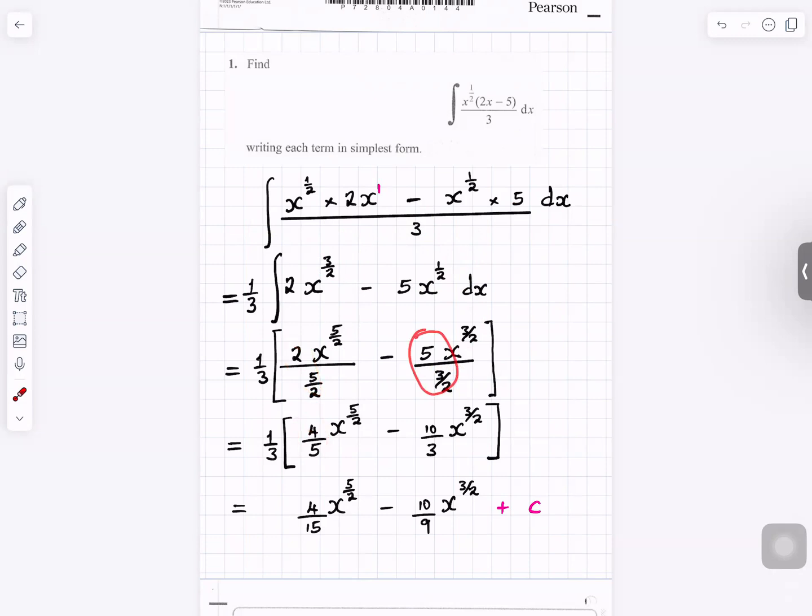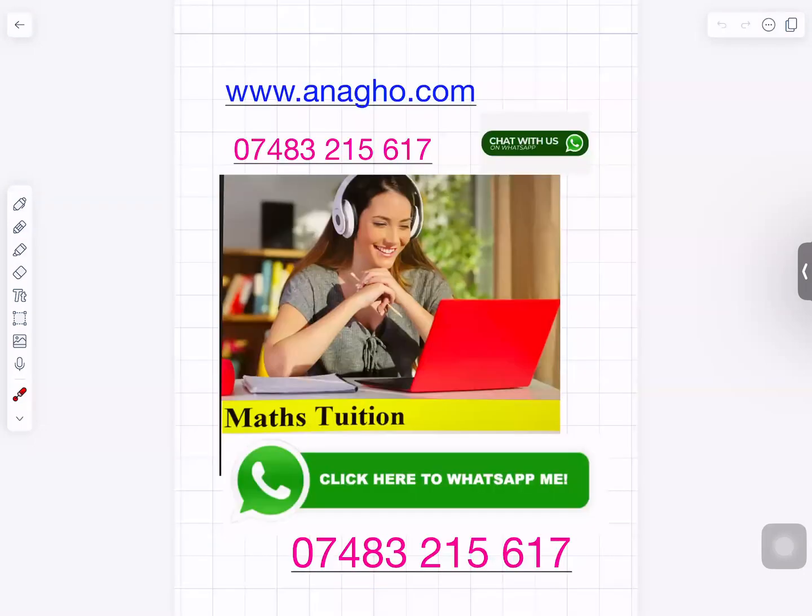Put that in your calculator to get 10 over 3, and then multiply by 1 over 3 each of them. Multiply by 1 over 3 and that will be your answer for question number one.